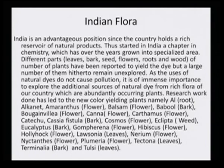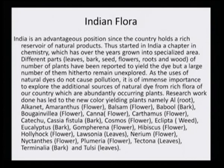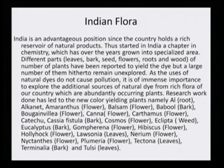Research has led to new color-yielding plants including: al root, alcanet, amaranthus flower, balsam flower, babul bark, bougainvillea flower, canna flower, carthamus flower, catechu, cassia fistula bark, cosmos flower, eclipta weed, eucalyptus bark, gomphrena flower, hibiscus flower, hollyhock flower, henna leaves, nerium flower, nyctanthus flower, plumeria flower, tectona leaves, terminalia bark, and tulsi leaves. This is just a few — there are a huge number of dye-yielding plants, including flowers, leaves, and barks.